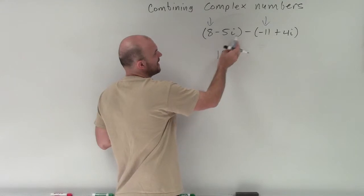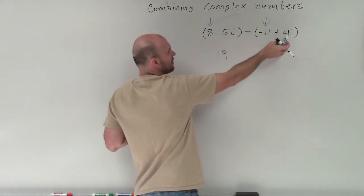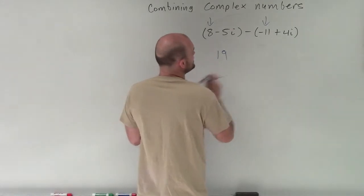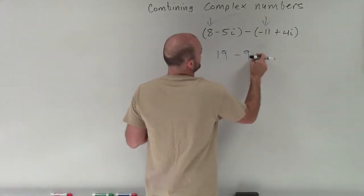Then I have negative 5i minus positive 4i. Well, negative 5i minus 4i is going to leave us with a negative 9i.